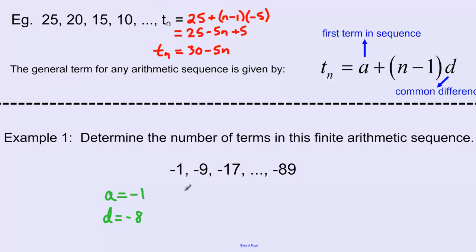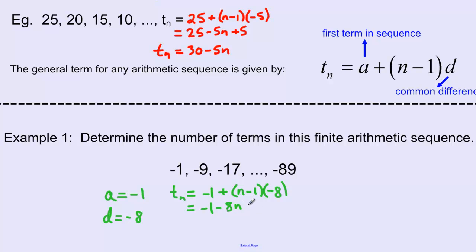Writing the general term formula: TN equals A, which is negative 1, plus N minus 1 times D, where D equals negative 8. Simplifying: negative 1 plus negative 8N plus positive 8 gives TN equals 7 minus 8N.